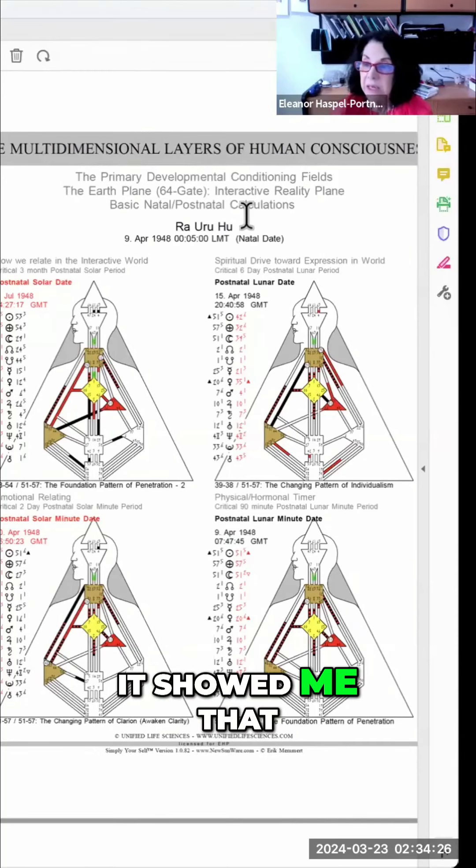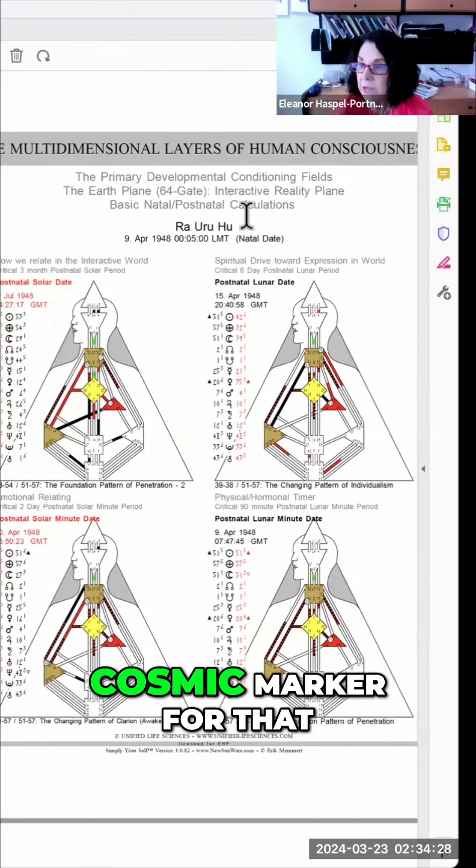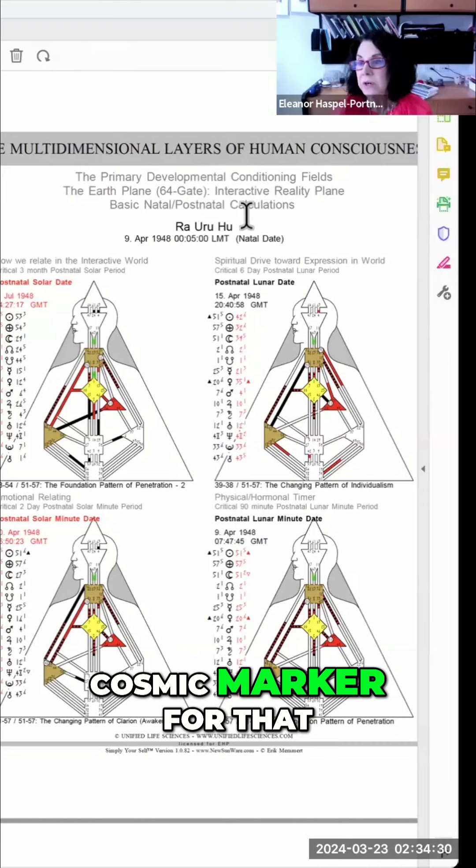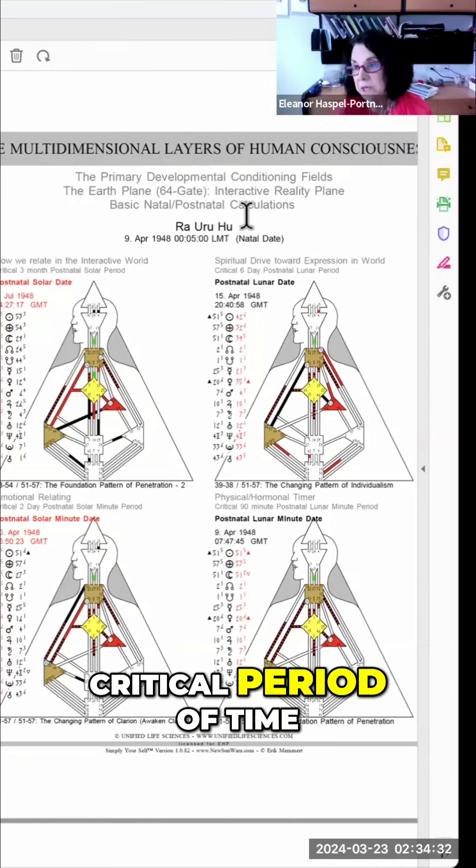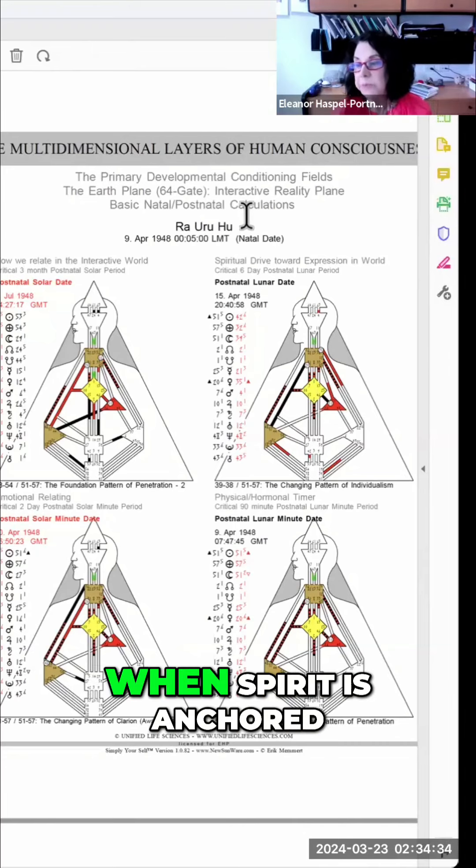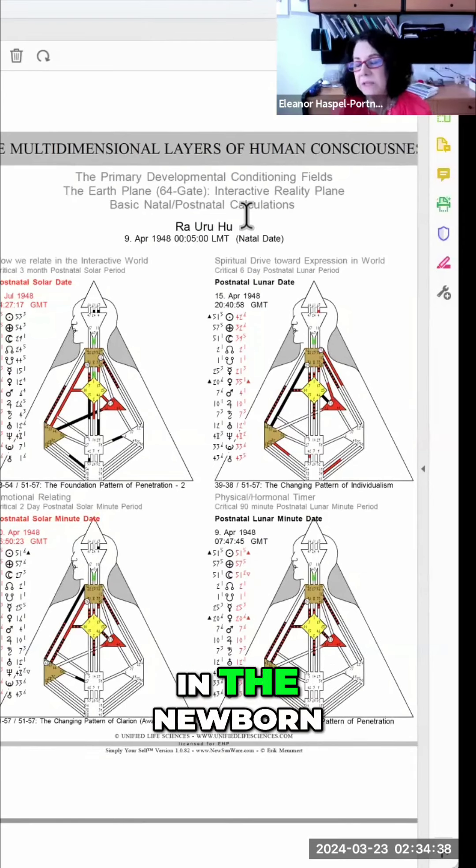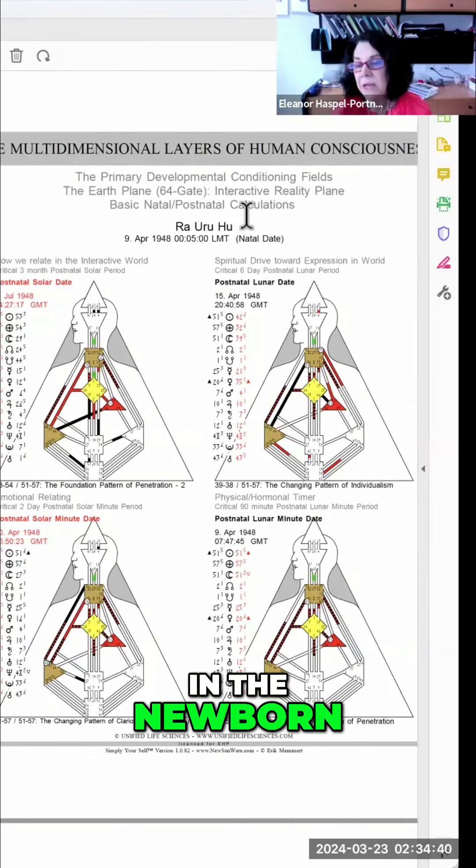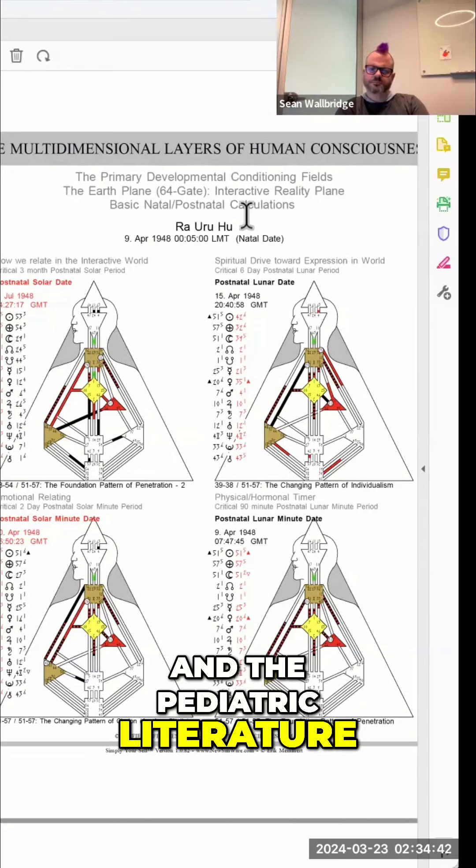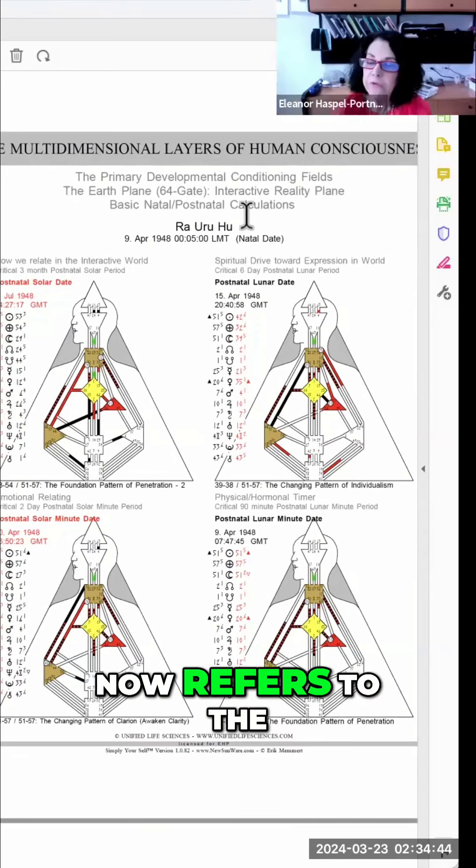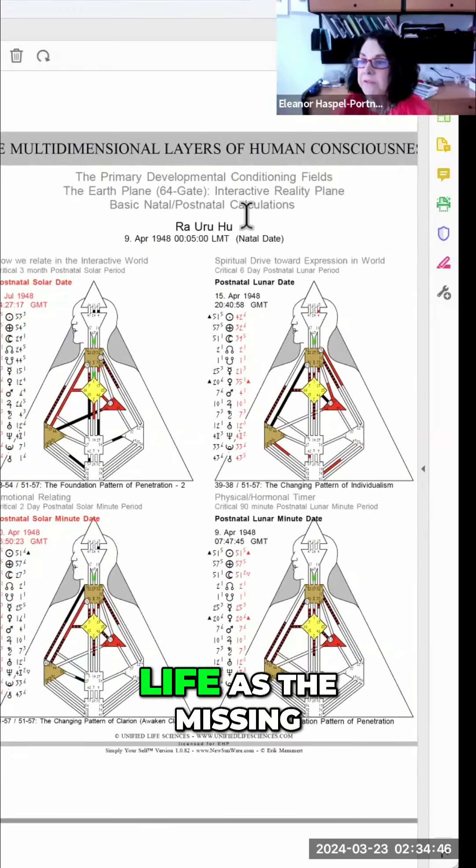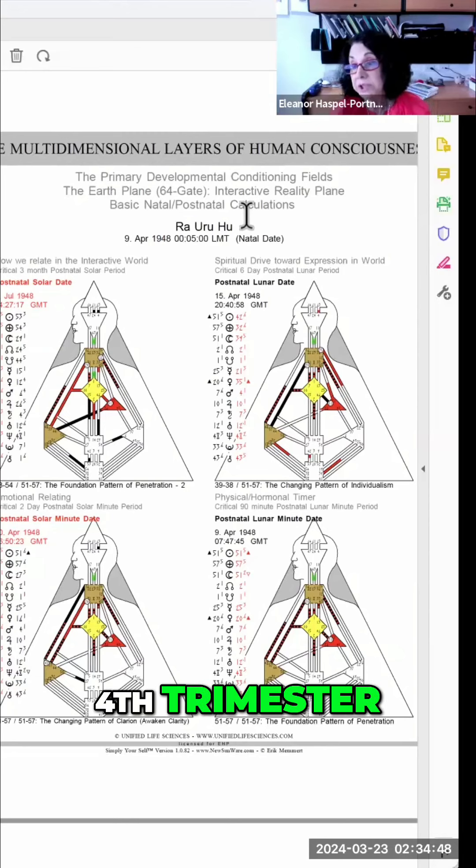It showed me that there is a real cosmic marker for that critical period of time when spirit is anchored in the fetus, in the newborn. And the pediatric literature now refers to the first three months of life as the missing fourth trimester.